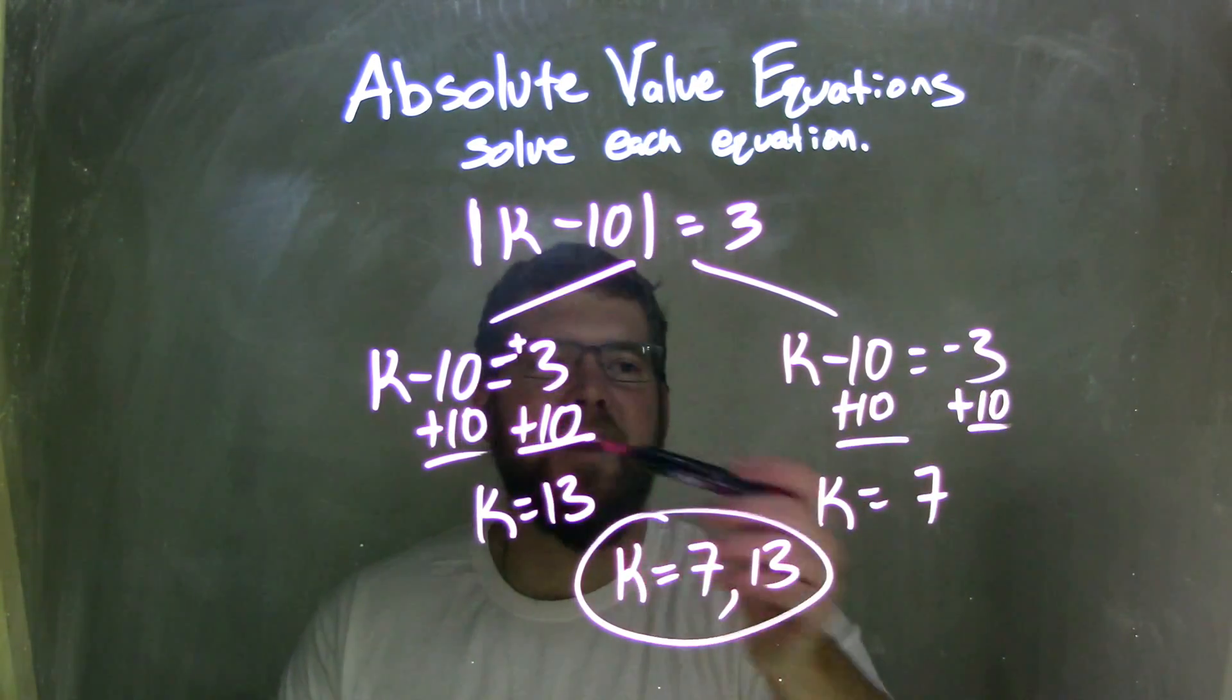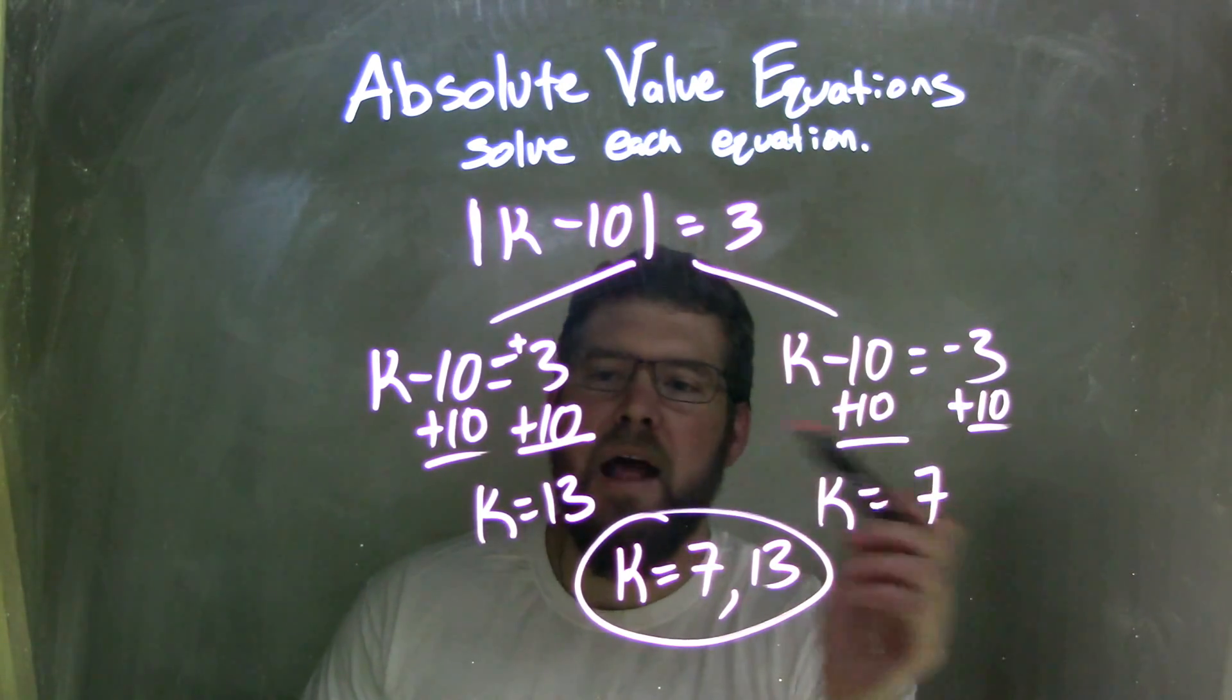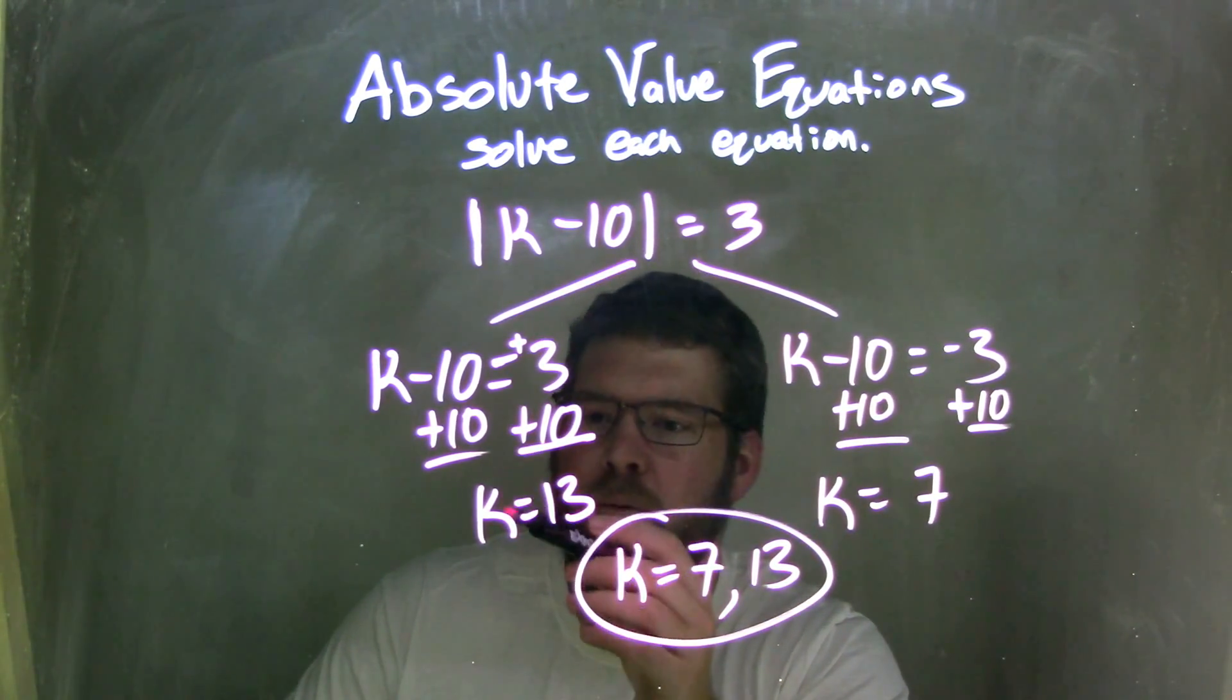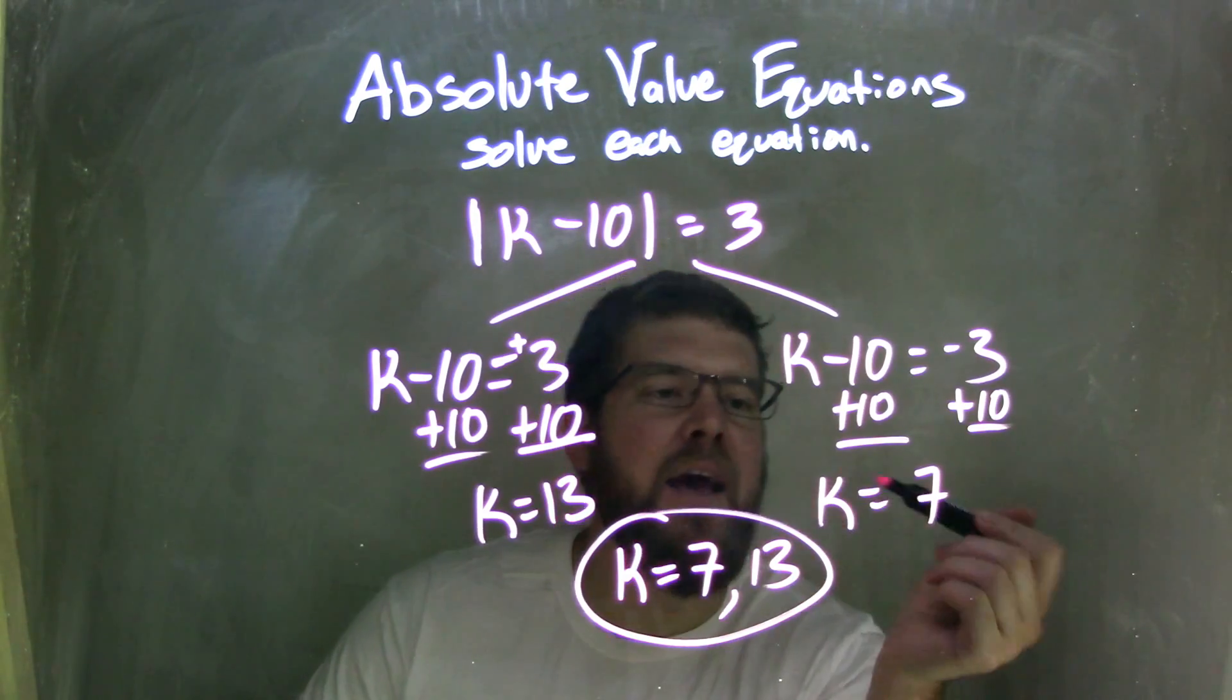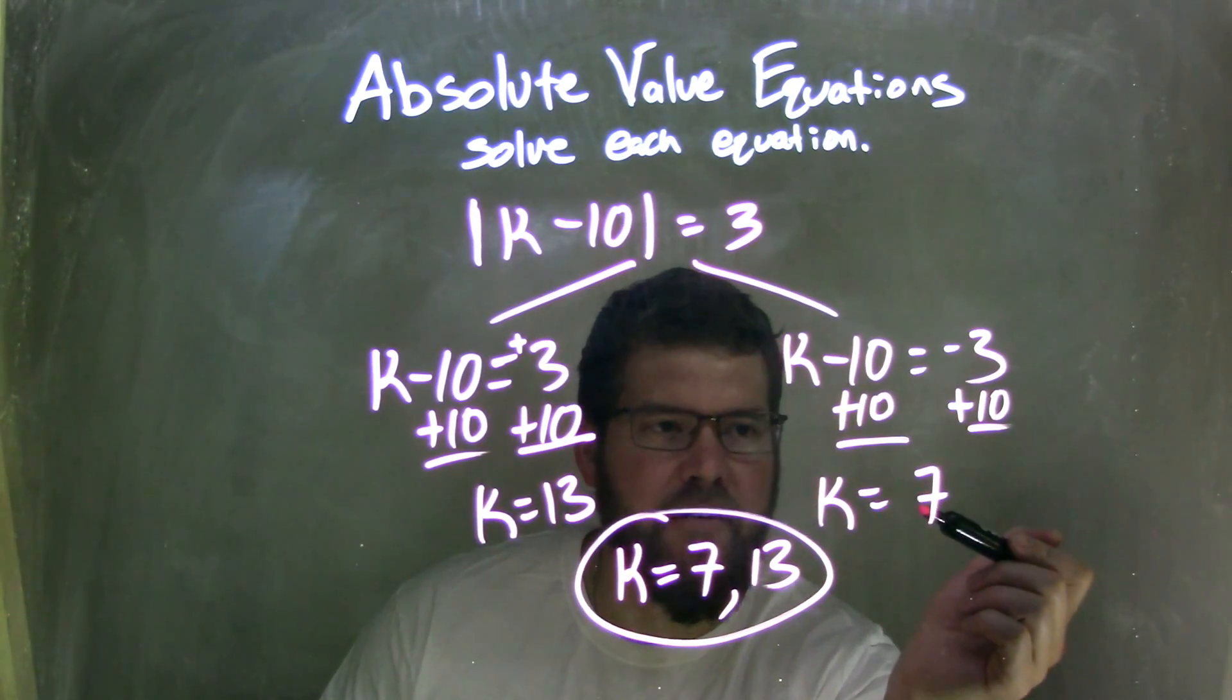I then added 10 to both sides of both equations. That allowed me to finish here with, on the left side, k equals 13, and on the right side, k equals 7.